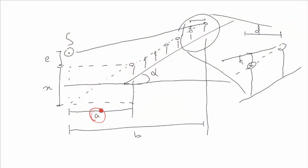Now that it is established that sloped seating is a good idea, there is often a lack of certainty in deciding the slope. This part involves some mathematics, but it boils down to a simple formula. The variables are: A — distance from the source to the first row; B — distance from the source to the last row; D — distance between seat rows; E — source height above the head of the listener in the first row; and H — sight line clearance at the last row.